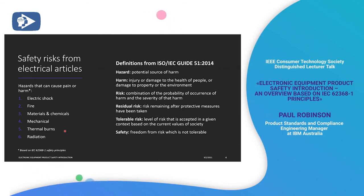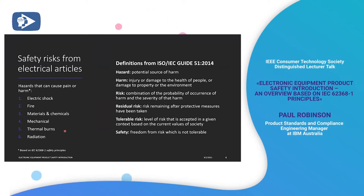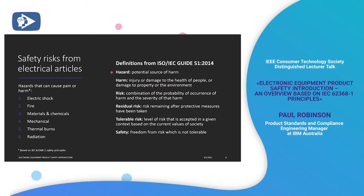Pretty much all of the safety risks we've identified from electrical articles in the International Safety Committee TC108 are: electric shock, fire, materials and chemicals hazards, mechanical hazards, thermal burn hazards, and radiation hazards. A hazard, as defined by ISO and IEC in Guide 51, is a potential source of harm — injury or damage to the health of people, or damage to property or the environment. That can include fire as well as personal injuries.